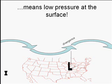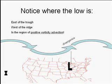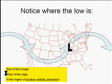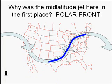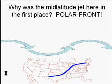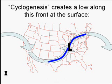We are explaining why there are low pressure systems at the Earth's surface. Notice where this low is: it is east of the trough, it is west of the ridge, and it is in the region of positive vorticity advection aloft. You can see better that the low is between the trough and the ridge in the region of positive vorticity advection. Why was the mid-latitude jet stream there in the first place? The polar front. There is a polar front at the surface, and so the mid-latitude jet stream is directly above it due to the thermal wind relationship. So this process, known as cyclogenesis, has created a low under the jet stream, and the jet stream is where it is because that's where the polar front is. Notice then that the cyclone lies on the front.